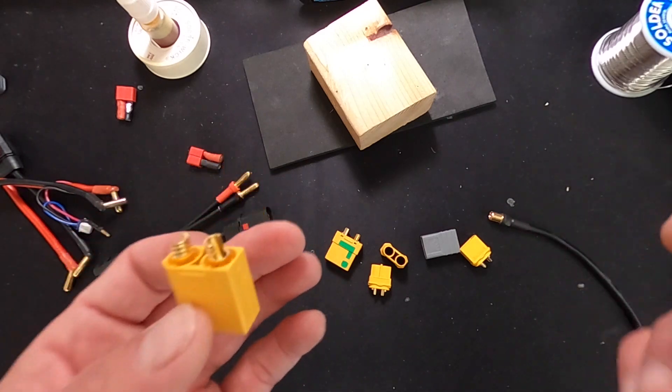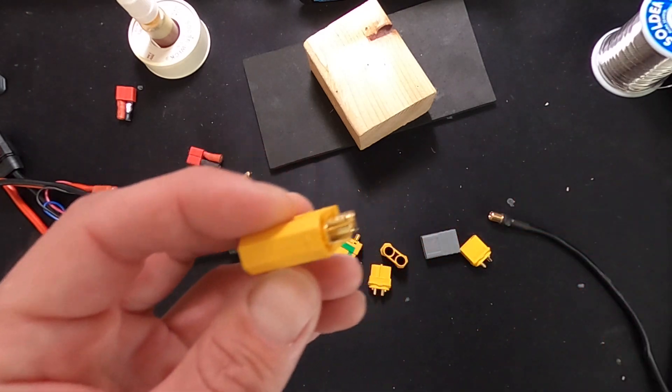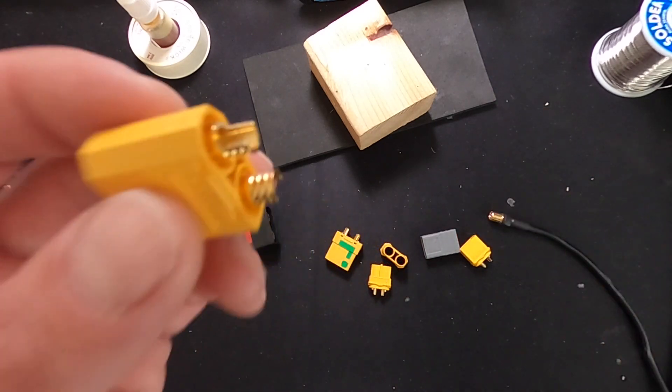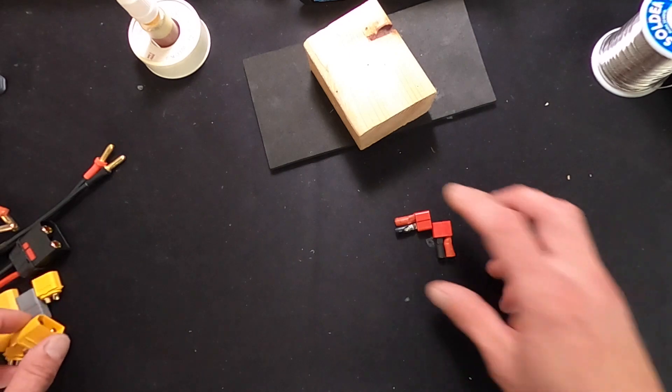Make sure that when you're soldering wires to either connectors or the bullets on your speed controls, that the wire is not sitting in a bubble of solder and it actually touches the surface.